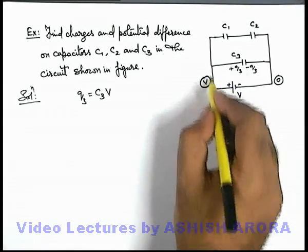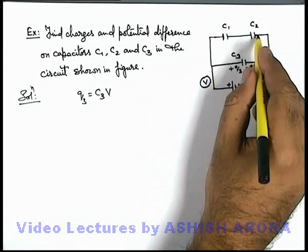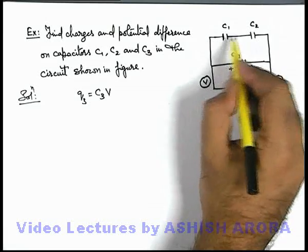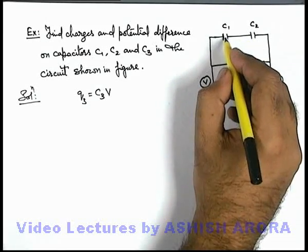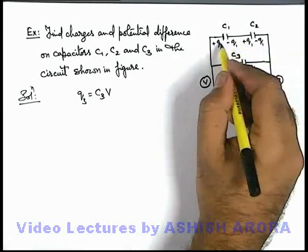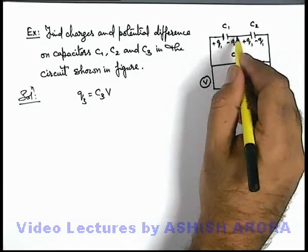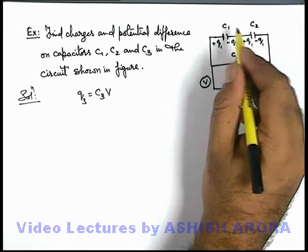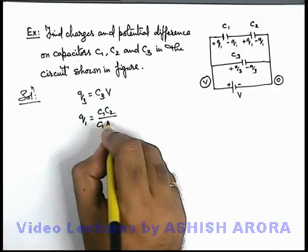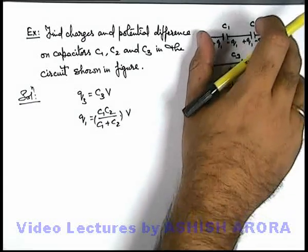In steady state, Q3 = C3·V. Similarly, the battery's positive terminal is also connected to capacitor C1, and the potential difference V is applied across capacitors C1 and C2 in series. These will receive charges +Q1 and -Q1 on each plate. Since they are in series combination, their equivalent capacitance is C1·C2 / (C1 + C2). So the charge Q1 = [C1·C2 / (C1 + C2)] × V, because potential difference V is applied across this series combination.